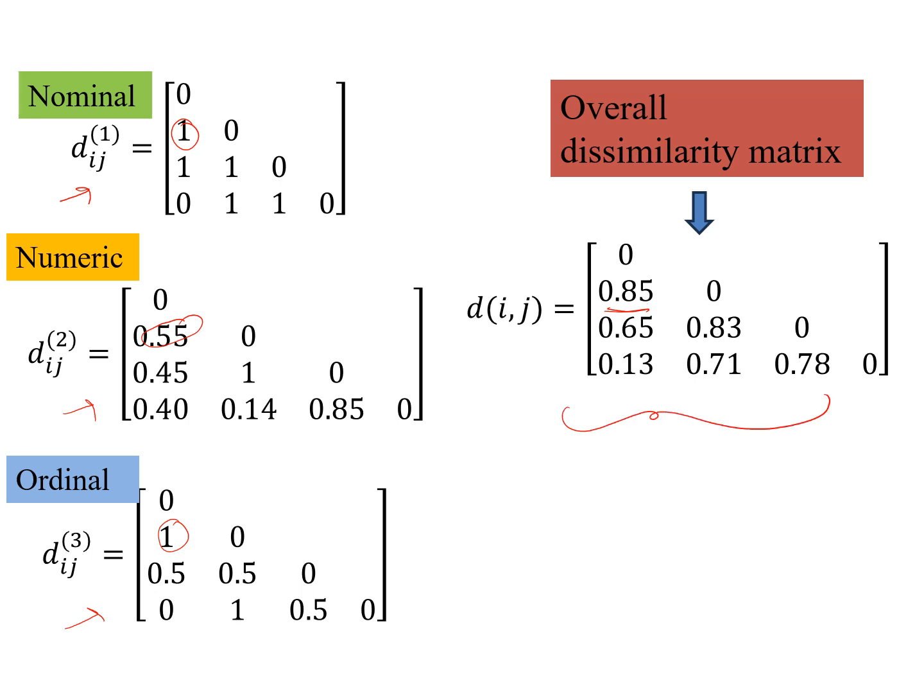So this is the overall dissimilarity matrix for our example, which had three types of attributes, nominal, numeric, and ordinal. Since there was no missing value for any data object, we could compute the individual distance matrices.